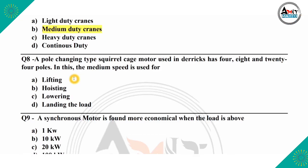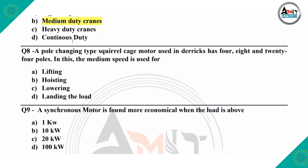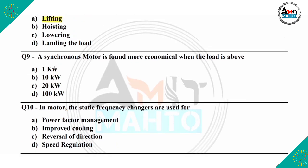A pole-changing type squirrel cage motor used in a derrick has 4, 8, and 24 poles. Among these, the medium speed is used for lifting, hoisting, lowering, and landing the load. The correct option is option A, which is lifting. A synchronous motor is found more economical when the load is above 1 kW, 10 kW, 20 kW, or 100 kW.